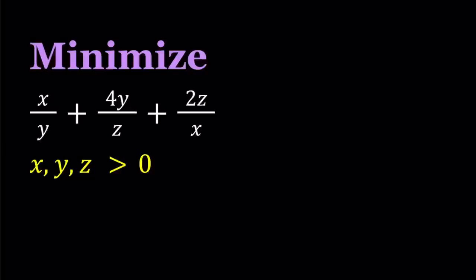Hello everyone. In this video, we're going to be finding the minimum value of an expression. x, y, z are positive quantities, and we're trying to minimize x over y plus 4y over z plus 2z over x. Notice that x, y, z cannot be 0, so we don't have an issue with that.